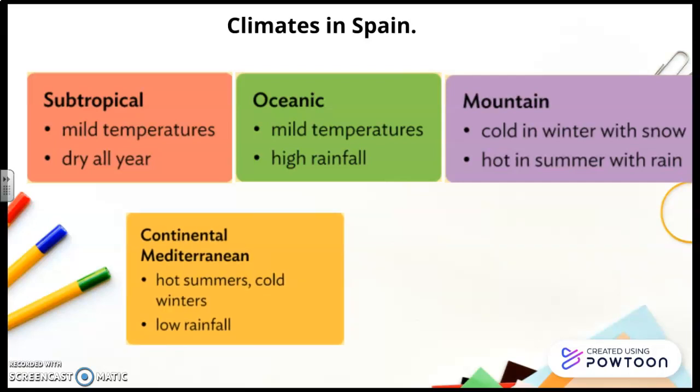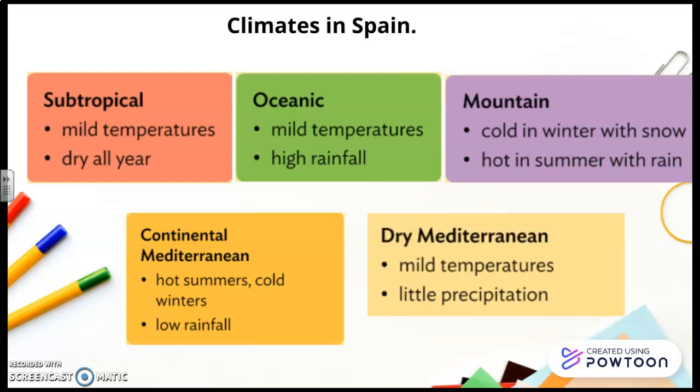Continental Mediterranean: hot summers, cold winters, low rainfall in the center of the Iberian Peninsula. And dry Mediterranean: mild temperatures and little precipitation on the coast of the Mediterranean Sea.